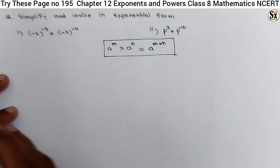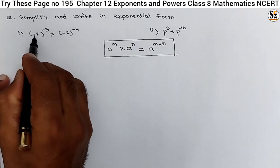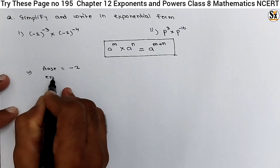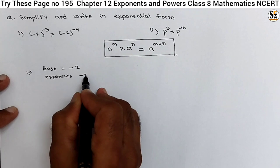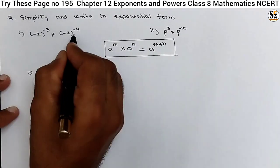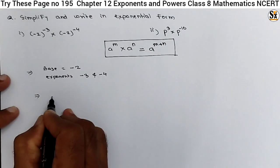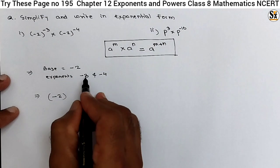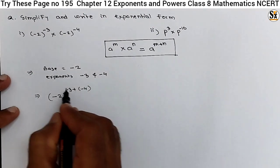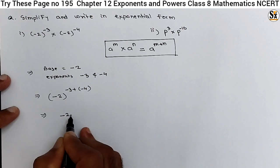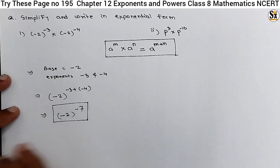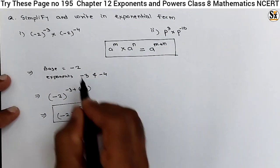In the first example, the base is minus 2. For the first term, minus 3 and minus 4 are the exponents. We will use this rule and simplify. The base is the same, so we write base minus 2 and add the exponents: minus 3 plus minus 4. Adding the exponents gives us minus 7. So minus 2 raised to power minus 7 is the simplified exponential form of this expression.